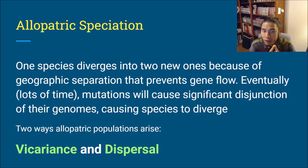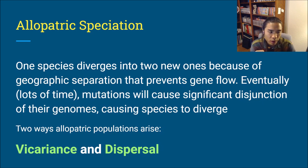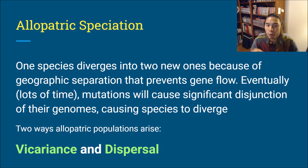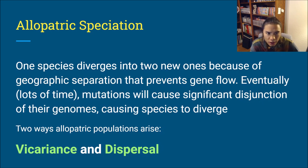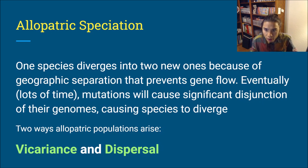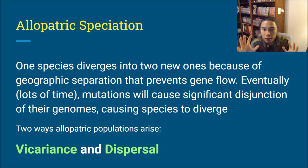There's allopatric and sympatric speciation. Allopatric speciation involves a population being split and separated. Sympatric speciation involves organisms in the same region with no geographical barrier. For this exam, you just need to know about allopatric speciation, where one species diverges into two new ones because of geographic separation that prevents gene flow. Eventually mutations will cause significant disjunction in their genomes, causing species to diverge. Once those populations become different enough they can't mate with each other, they are considered separate species.